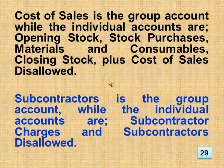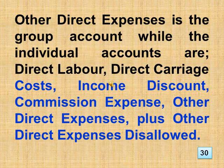Cost of sales is the group account while the individual accounts are: opening stock, stock purchases, materials and consumables, closing stock, plus cost of sales disallowed. Subcontractors is the group account, while the individual accounts are subcontractor charges and subcontractors disallowed. Other direct expenses is the group account while the individual accounts are: direct labor, direct carriage costs, income discount, commission expense, other direct expenses, plus other direct expenses disallowed.